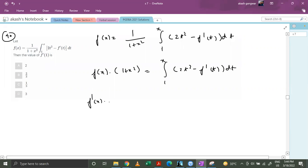We have f'(x)(1 + x²) + 2x·f(x) by the product rule. This equals, applying Leibniz theorem: 2x² - f'(x)·(dx/dx) minus [2(1)² - f'(1)]·(d1/dx), which is zero.